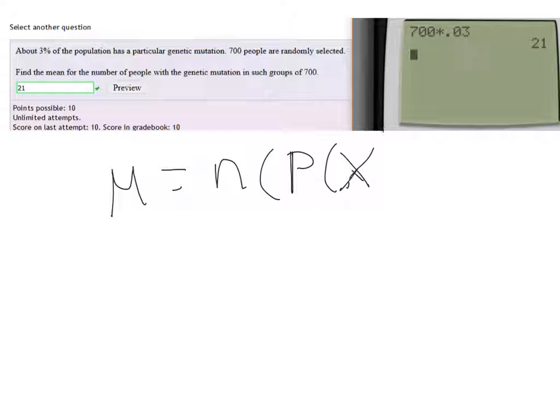It's not writing very well. So for this case, we have 700, and we're going to multiply by the probability of success, 0.03.